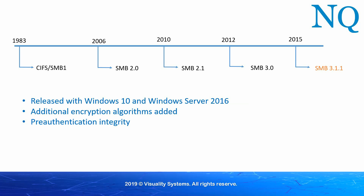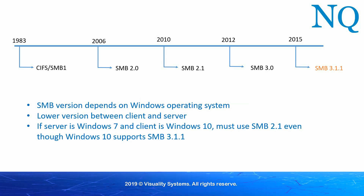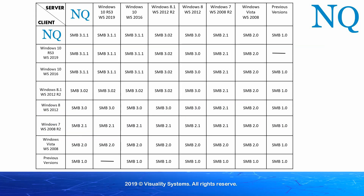So why do we still have all these different versions of SMB running? It's because SMB is tightly coupled to the Windows operating system that it runs on top of. So, for example, if your SMB server is a Windows 7 box, it only supports SMB 2.1 and lower. So even if your client is a Windows 10 box that supports SMB 3.1.1, it must still use SMB 2.1 to talk to the Windows 7 server. This slide shows the relationship between the versions of Windows servers versus clients and what version of SMB can run, allowing the client and server to communicate with each other. Note that any operating system before Windows Vista, such as Windows 95, must still use SMB 1.